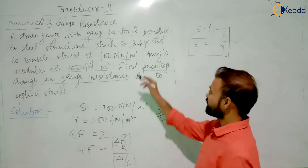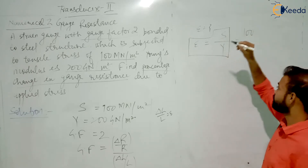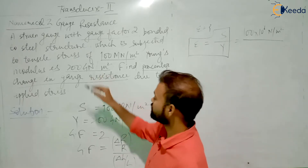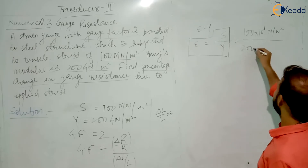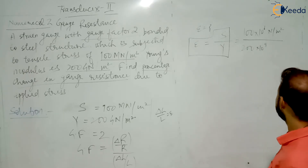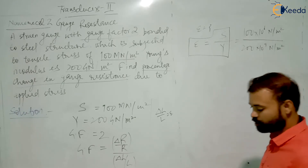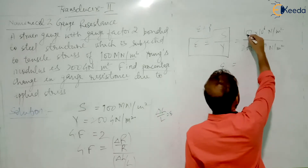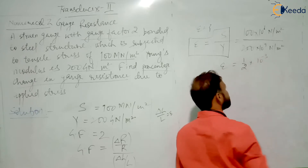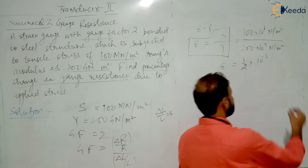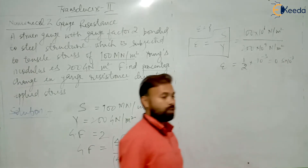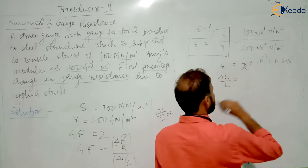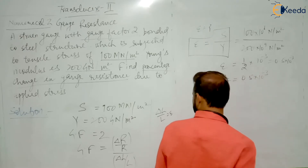Stress is given as 100 mega newton per meter square, where mega means 10 to the power 6, divided by Young's modulus which is 200 giga newton per meter square, that is 200 into 10 to the power 9 newton per meter square. Giga means 10 to the power 9. From here, epsilon can be calculated as 1 by 2 into 10 to the power minus 3, or 0.5 into 10 to the power minus 3. So the value of delta L by L is 0.5 into 10 to the power minus 3.